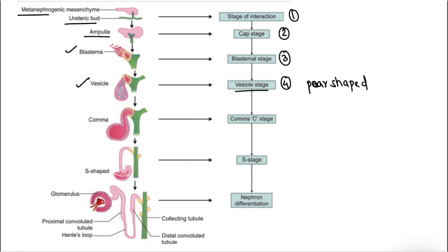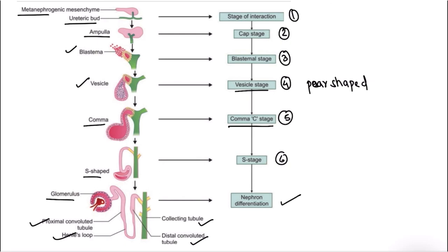After the vesicle stage, the vesicle forms a comma-like structure — this is called the comma-C stage, the fifth stage. The sixth stage is the S stage, because this comma-shaped structure forms an S-shaped structure. This S-shaped structure then differentiates to form the glomerulus, proximal convoluted tubule, loop of Henle, distal convoluted tubule, and collecting duct — completing nephron differentiation, which is the last stage in the development of the kidney.